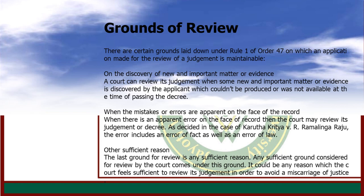Grounds for Review: There are certain grounds laid down under Rule 1 of Order 47 on which an application made for the review of a judgment is maintainable. On the discovery of new and important matter or evidence, a court can review its judgment when some new and important matter or evidence is discovered by the applicant which could not be produced or was not available at the time of passing the decree.